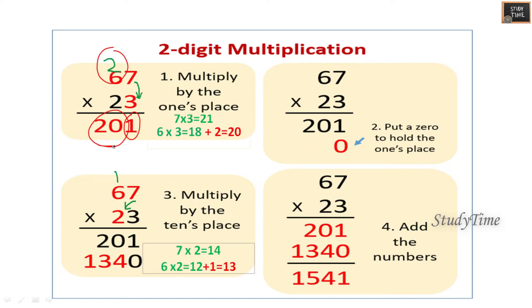Next we'll see 2 digit multiplication. See here 67 into 23. So first 7 into 3 is 21, 2 is placed on top and 1 is placed. 3 into 6 is 18, 18 plus 2 is 20. So this is how we have to multiply two digit numbers.